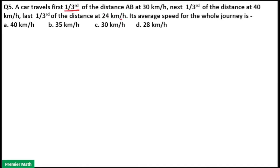A car travels first one third of the distance AB at 30 km per hour, next one third of the distance at 40 km per hour, last one third of the distance at 24 km per hour. Its average speed for the whole journey is?